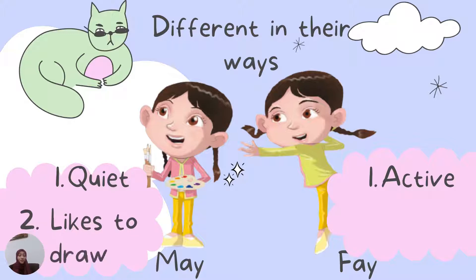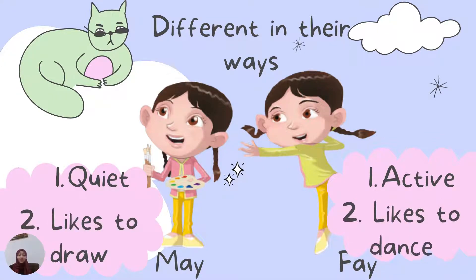Number two: May likes to draw — as we saw, she is holding her colors and paintbrush. But Faye likes to dance. So, do we see here the similarities and differences between these two girls? They are very similar in their shape and their face, so it's difficult to say who is May and who is Faye. But we can see the differences in their behavior and the things that they like.